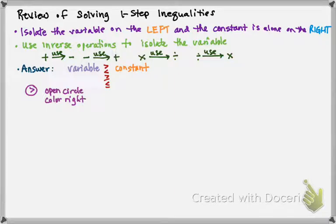If I have less than symbol, then it's still an open circle. And I'm going to color left, because it's pointing to the left.